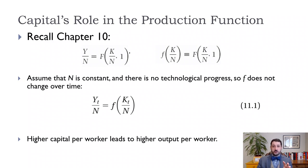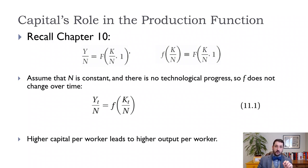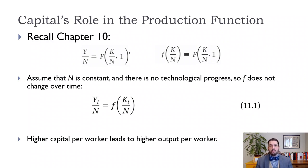Our production function from chapter 10 was just that output per worker is some function of capital per worker. We usually write it with a little f in terms of capital per worker. Sometimes you'll see capital per worker written as a little k and output per worker written as a little y. The understanding is that lowercase letters represent per-worker numbers and capital letters represent total numbers. We're going to assume for the moment that population is constant, so we'll have the same number of workers every year and no technological progress — these are the two assumptions we'll relax in chapter 12.